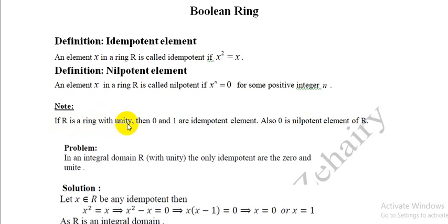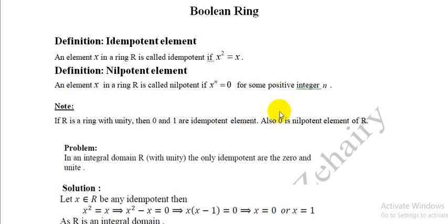We note that if R is a ring with unity, then 0 and 1 are idempotent elements, since 0² = 0 and 1² = 1, so both satisfy the idempotent condition. Also, 0 is a nilpotent element because 0ⁿ = 0. So 0 is both an idempotent and nilpotent element, but 1 (the unity) is an idempotent element only.